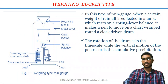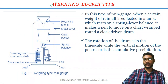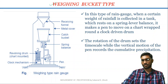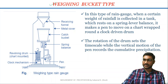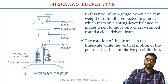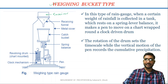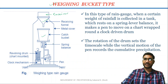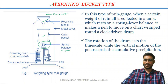The second type of recording gauge is the weighing bucket type recording gauge. This type of recording gauge consists of a receiver, a receiving funnel, a bucket, and a weighing mechanism. This is the receiver, this is the receiving funnel, this is the catch bucket, and the weighing mechanism here is a spring balance.